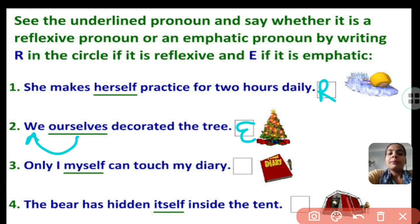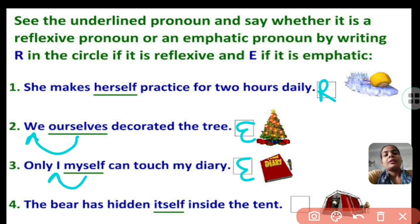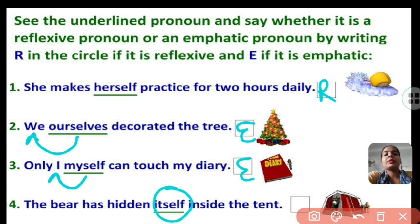Only I myself can touch my time. So myself here is again emphatic pronoun because it is emphasizing the subject I. The bear has hidden itself inside the tent. So itself is the object of the verb, and therefore itself is a reflexive pronoun.